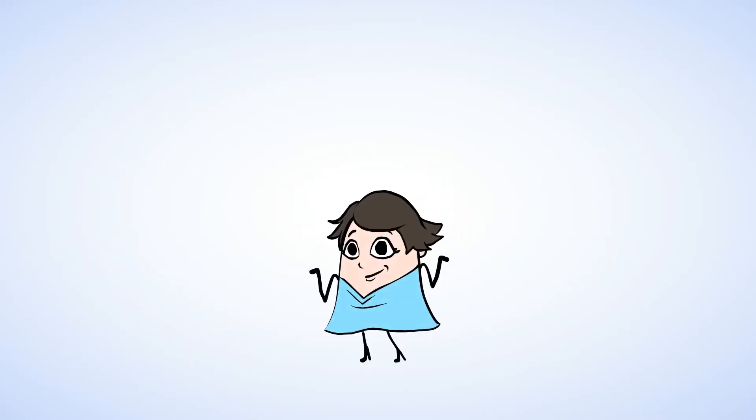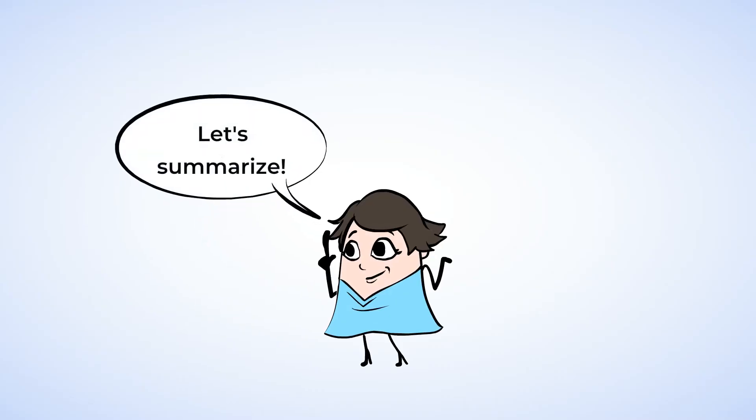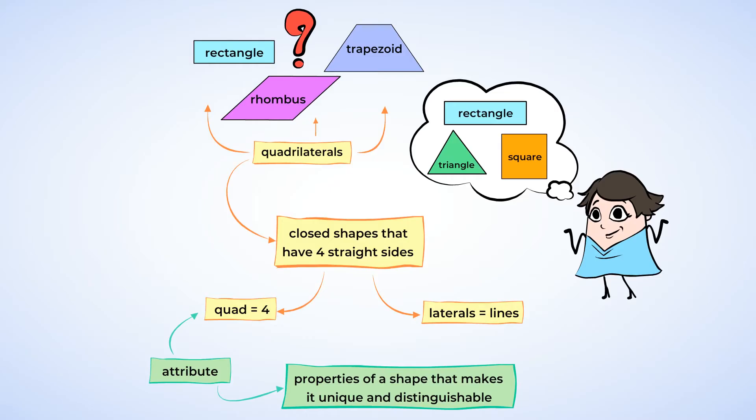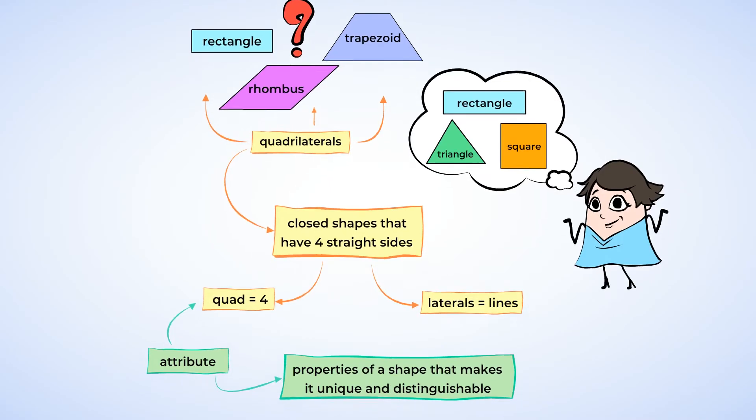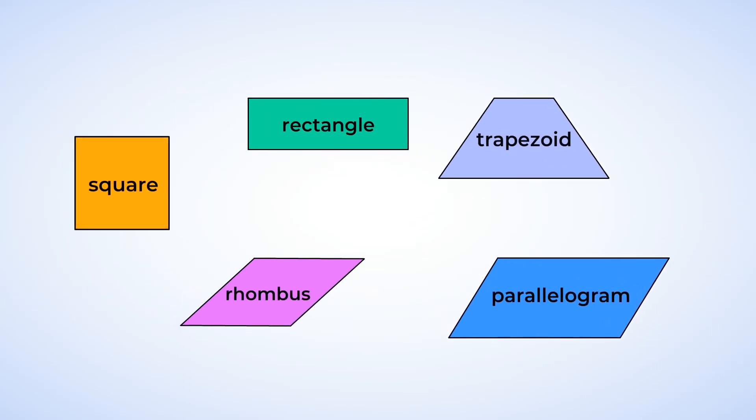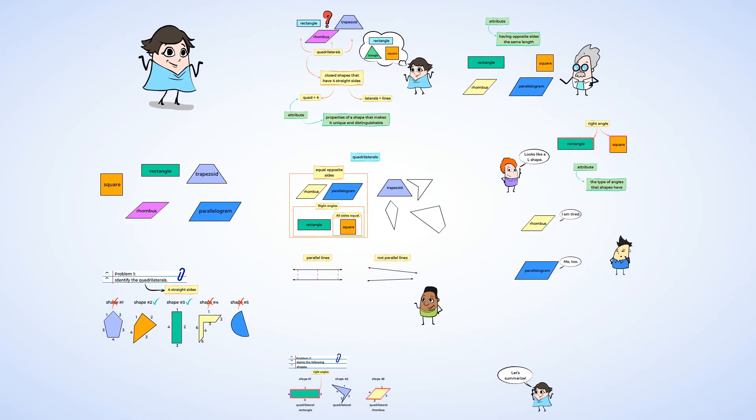Woo! Who would have thought that there was so much that goes into shapes? Let's take a quick sec to summarize what we learned. You learned about quadrilaterals and that they're all shapes with four straight sides. And you also learned about attributes, or ways to organize shapes. You were able to classify and identify shapes like squares, rectangles, parallelogram, rhombus, and trapezoid. Fantastic work, and I will see you in the next video.